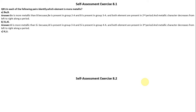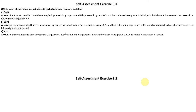Next pair: Potassium or Lithium. Potassium is more metallic than Lithium because Lithium is present in the second period and Potassium is present in the fourth period. Both belong to group 1A, and metallic character increases from top to bottom along a group.